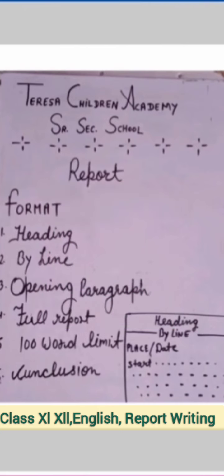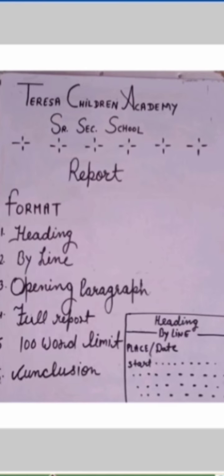There is a format for a report. We should make a box. After that we should write a heading of the report. After the heading, we will write the byline, and after that we will write place and date. After place, we use a comma and write the date, then the opening paragraph. We should write the report in 100 words, and at the end we will write the conclusion of the report.